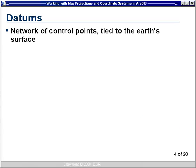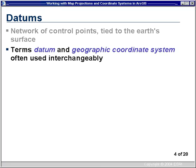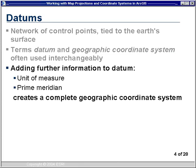I wanted to discuss a little more about datums versus geographic coordinate systems. A datum is really the main portion of a geographic coordinate system — it's a network of control points tied to the Earth's surface. A lot of times you'll see the terms datum and geographic coordinate system used interchangeably. But what it really is: a datum is the network of control points, and when you add more information to it — such as an angular unit of measure and a prime meridian — that creates a complete geographic coordinate system definition. You should try and use that terminology when talking about what the information is on your data set.